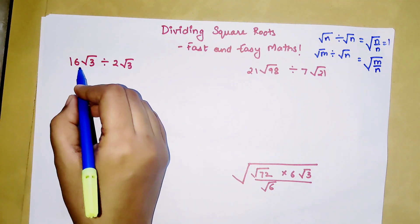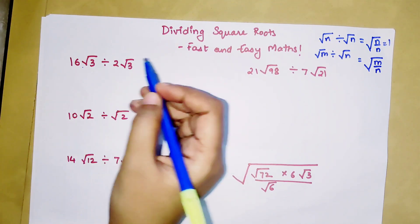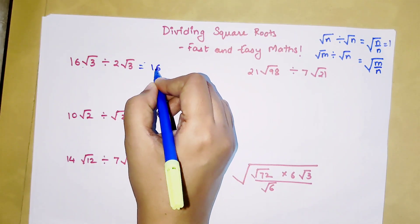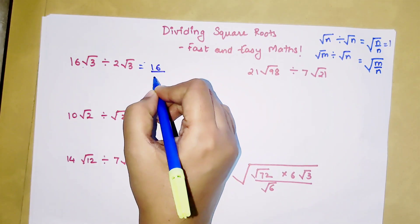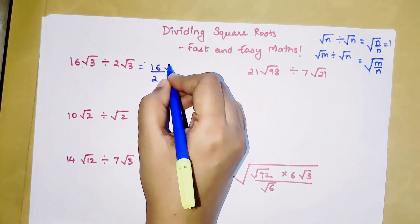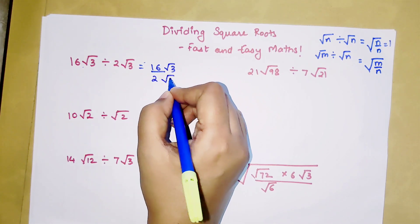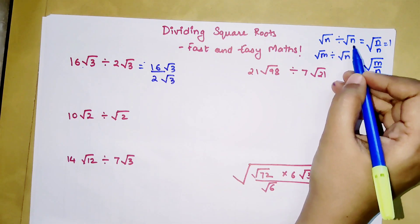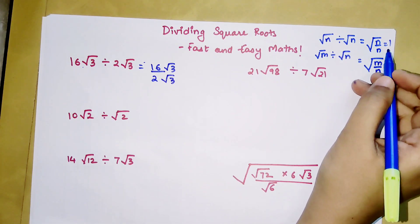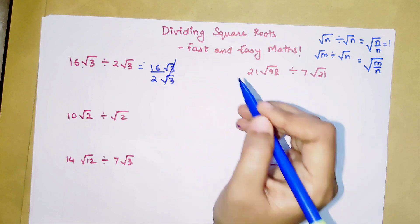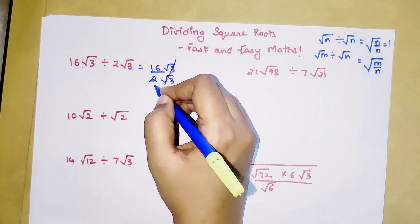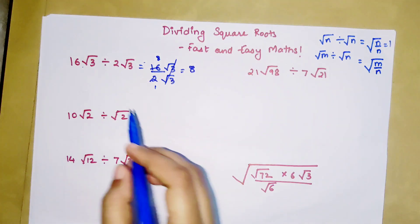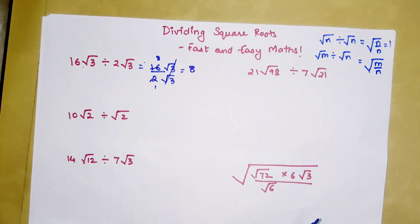Here we have 16√3 divided by 2√3. We split it as 16 upon 2, then √3 upon √3. Since the same number appears under both square roots they cancel out, giving us 1s. So 16 divided by 2 is 8, and your final answer is just 8.